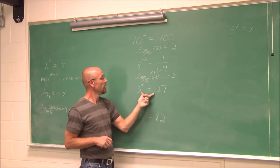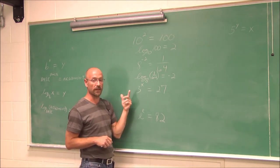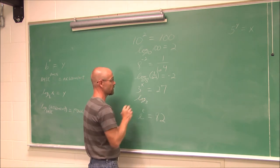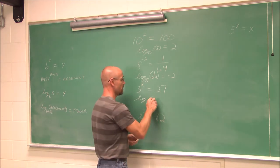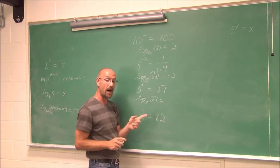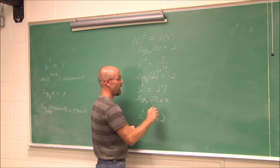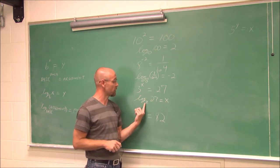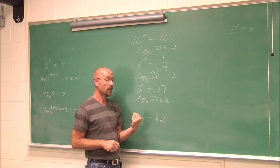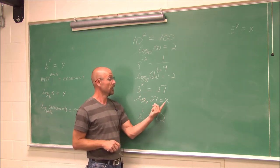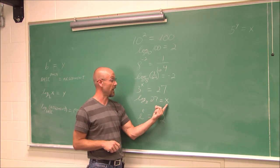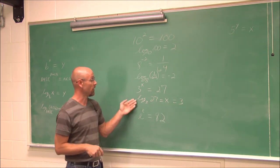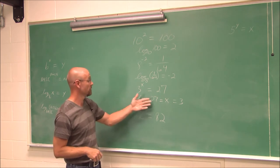Let's look at this one: 3 to the x equals 27. I identify the base as 3, so I write log base 3 of 27 equals x. To solve, I ask: 3 to what power is 27? Well, 3 to the third power is 27. So x equals 3.